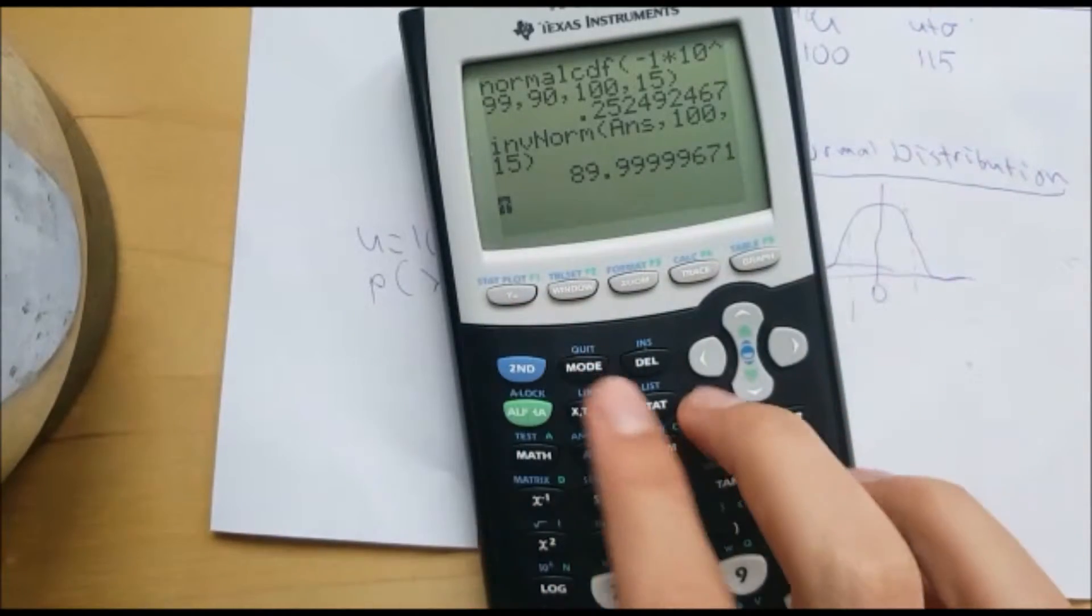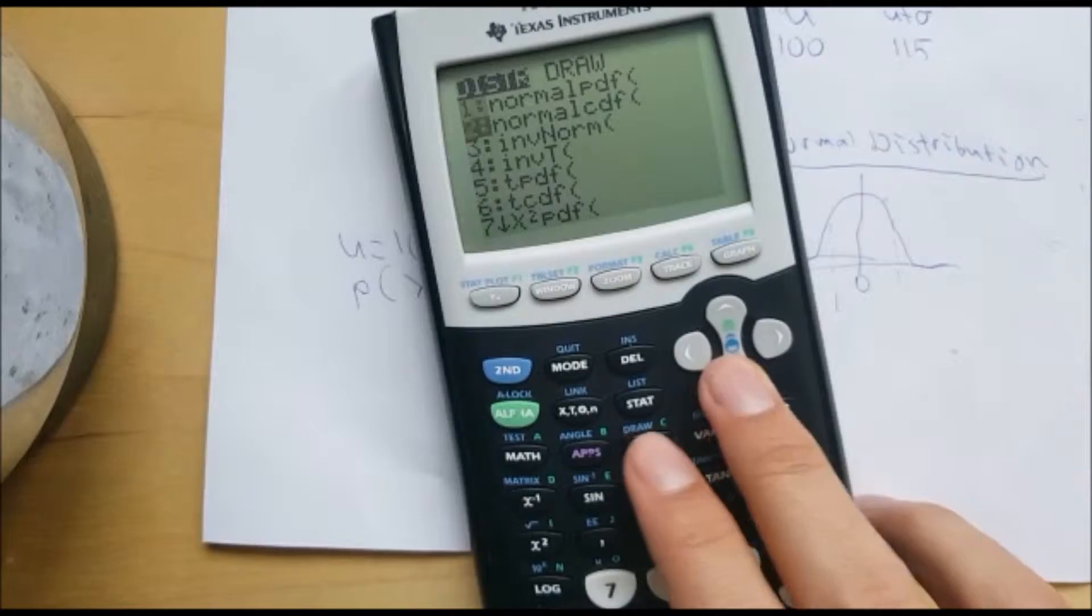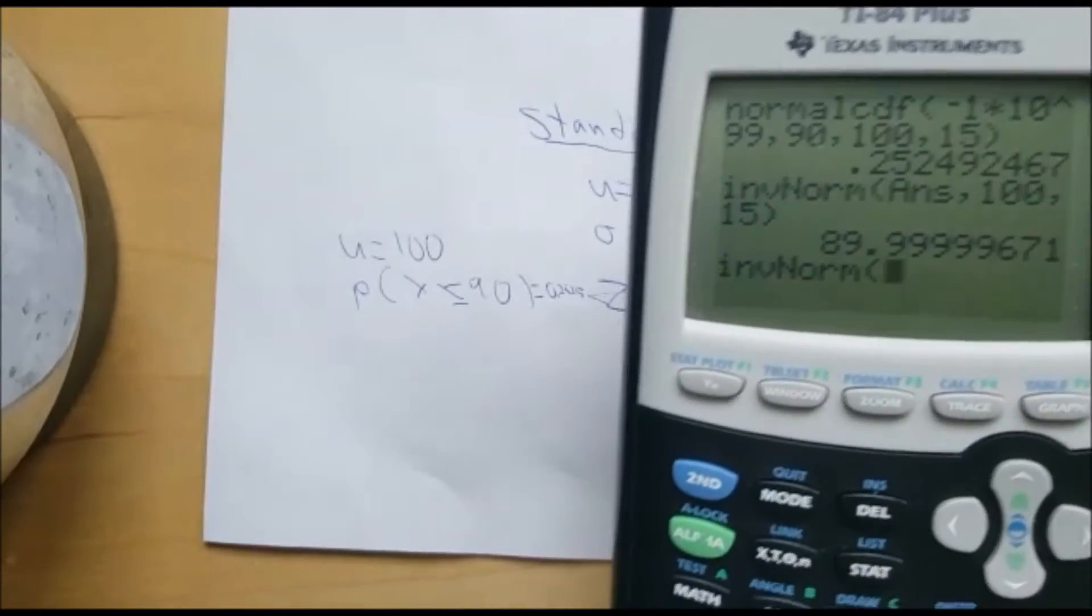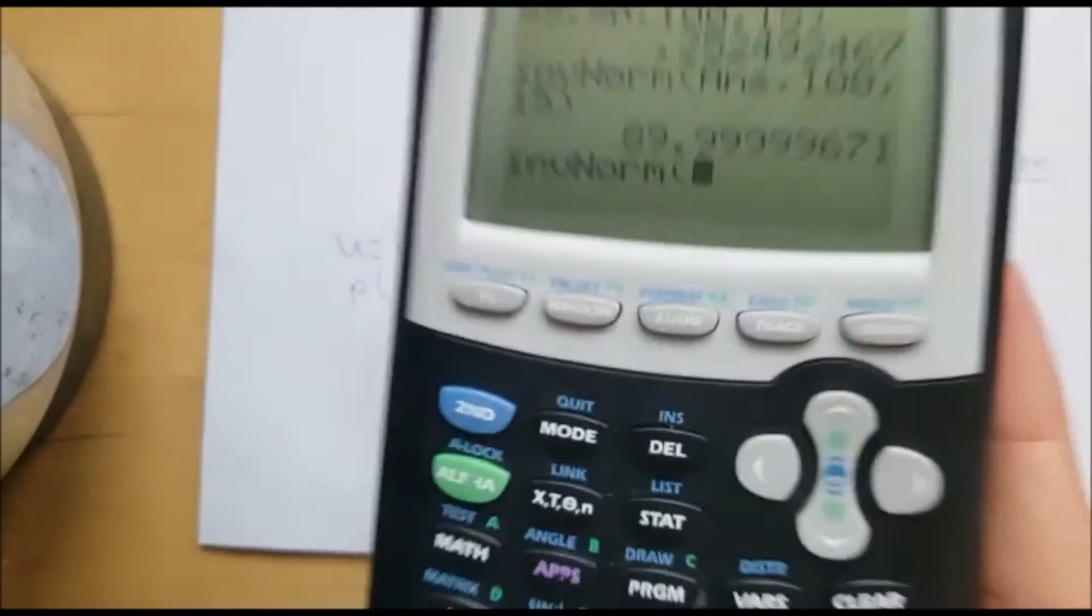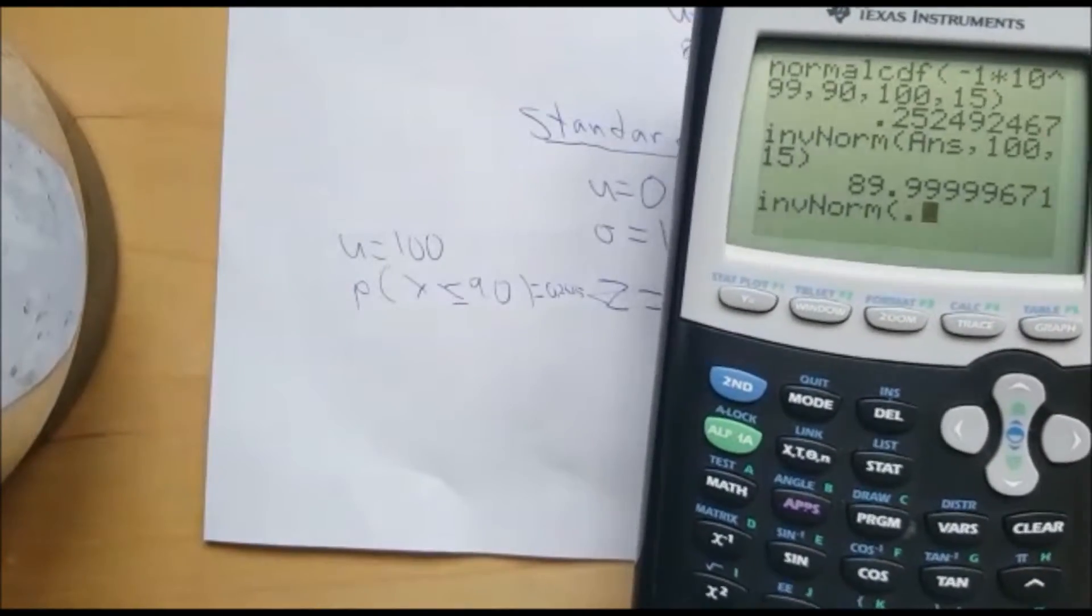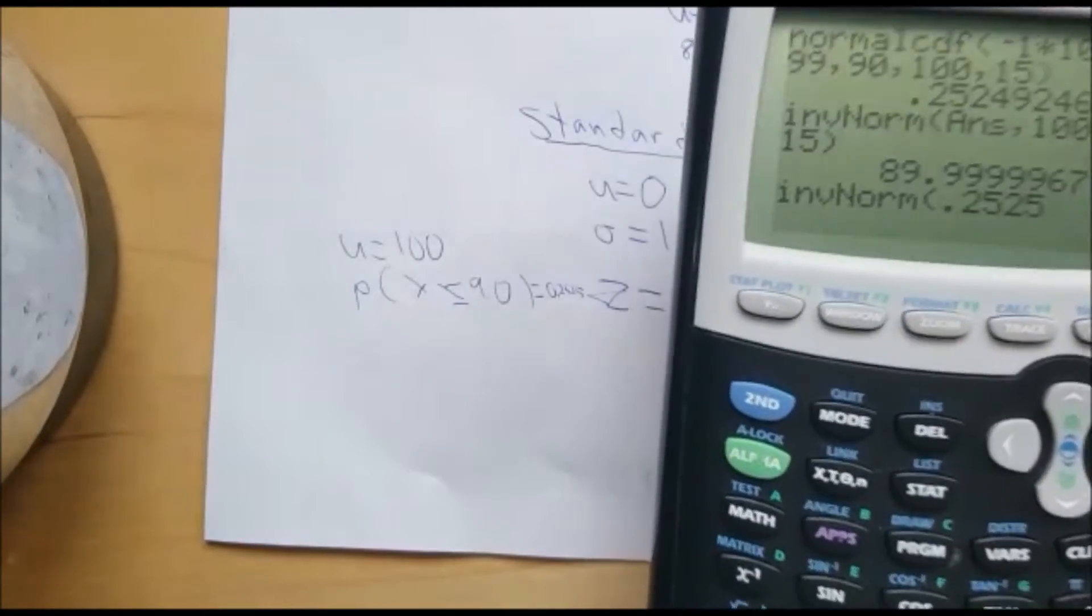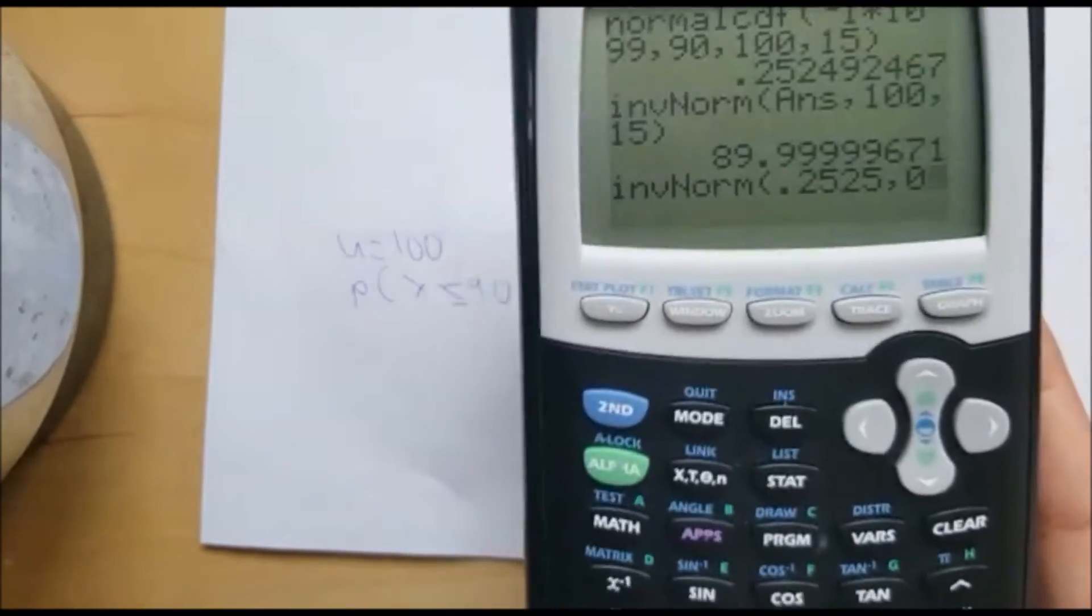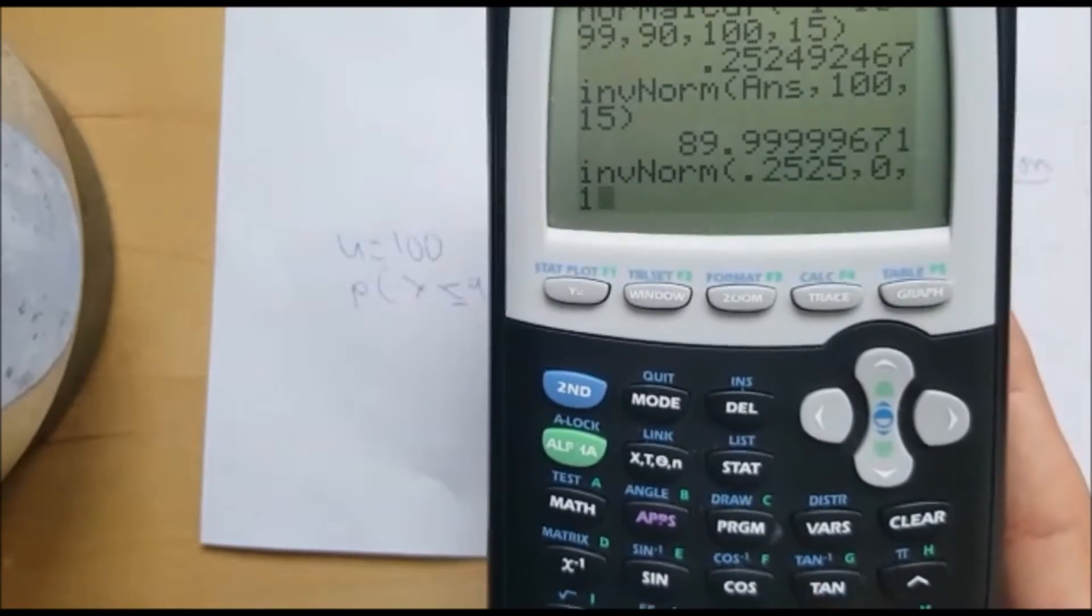So it's 0.2525. So now, watch this, you can do the inverse normal. Let's use the standard distribution one. First, we plug in that probability, 0.2525. Then, we do the ones for the standard normal one where mean was 0 and standard deviation was 1.